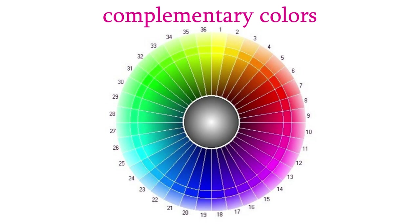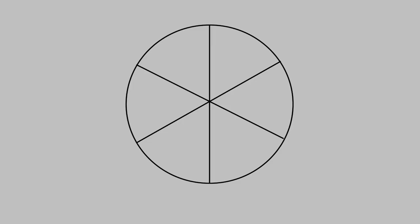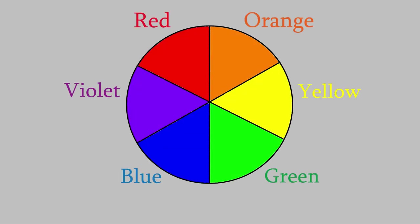It's not really necessary to memorize this wheel. You can create a rough version of it by drawing a circle and dividing it into six sections. These sections can be labeled red, orange, yellow, green, blue, and violet, similar to the ROYGBIV acronym you may be familiar with, but without the I for indigo.